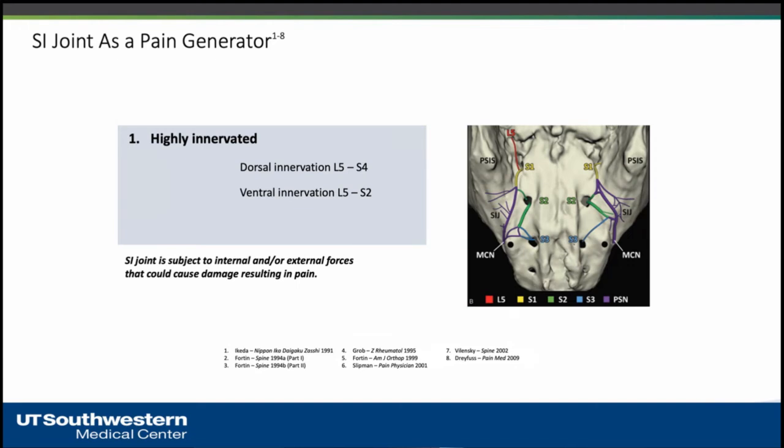Regarding innervation — we all know that when a nerve passes a joint it supplies that joint. Because the sacroiliac joint is a large joint, it has many nerve supplies: dorsally from L5 to S4, and ventrally from L5 to S2. This will help us understand later how it can mimic any of the other diseases affecting the lower back.